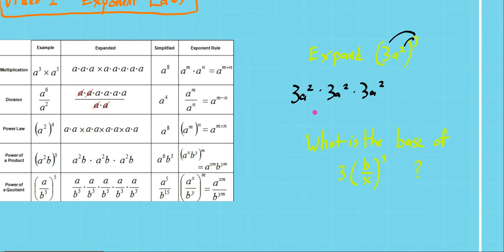So that's the same as 3 to the 1, there's 1 three before, times 3, and a to the 2 times 3. There were 2 a's before, times 3. And that's the same as 3 cubed a to the 6th power.